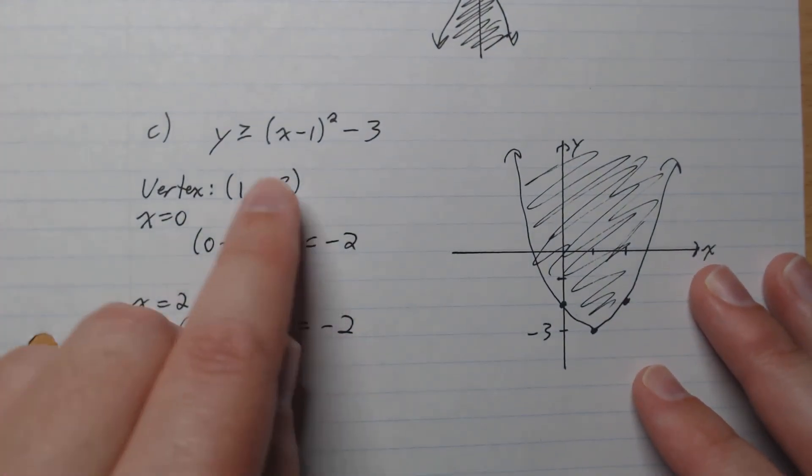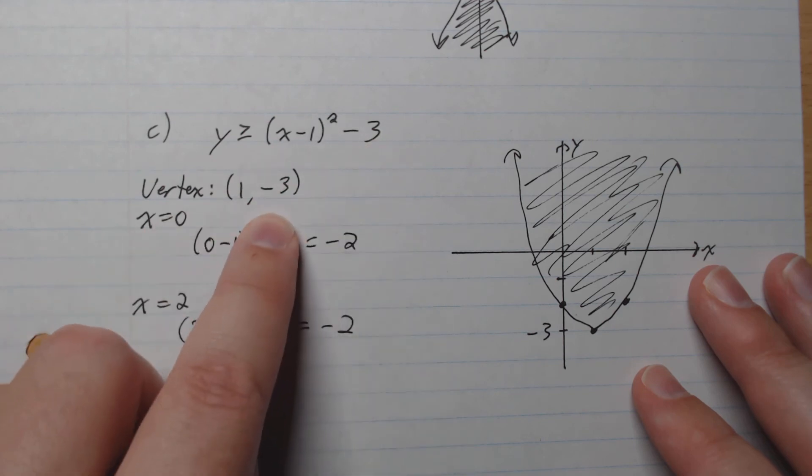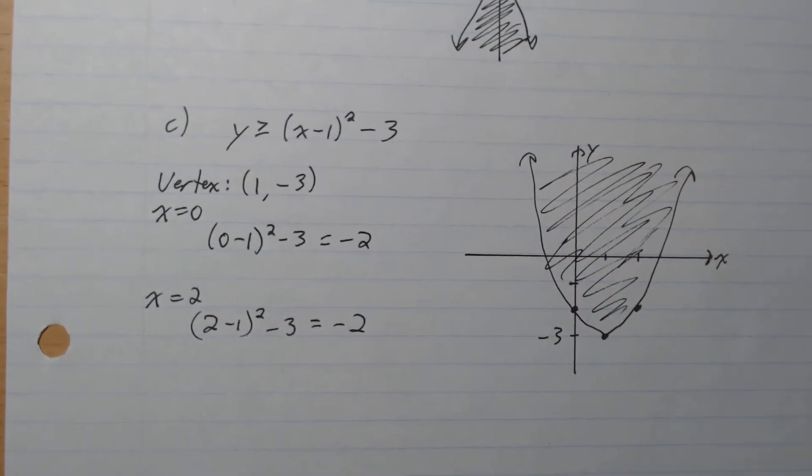C, y is greater or equal to (x - 1) squared minus 3. We notice that the vertex right away is 1 comma negative 3 like that. So we can put that in our graph. We're going to take some points around the vertex. So x equals 0 gives us y negative 2. So we plug that there. x equals 2, plug it in, we get negative 2 as well. So 2 negative 2 like that. And then we graph our function as such. It is solid boundary line because allowed to be equal. And it's y greater than that function. So above like that. And so that's the solution region.